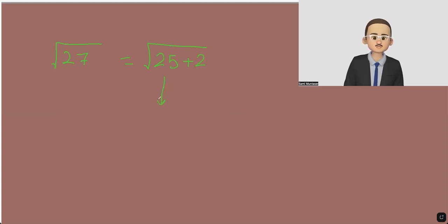Now, square root of 25 is 5, but then we still have plus root 2. And what we do, we write the 2, and then we multiply this 5 by 2, and we get 10.